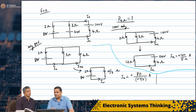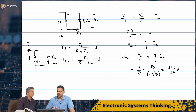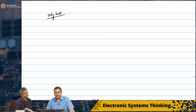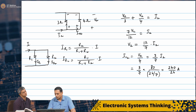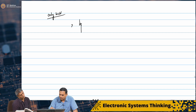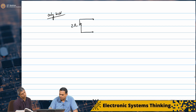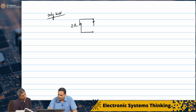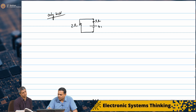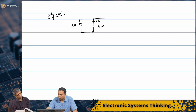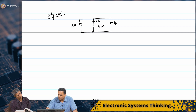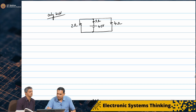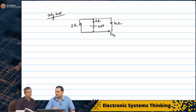Now let us go back to the original problem. We have a third voltage source, the 40 volt source. We need to apply only the 40 volt source: the 80 volt is de-energized leaving 2 ohms, and the 100 volt is de-energized leaving 4 ohms. We have 3 ohms and 40 volts in one arm. I call the current through the 4 ohm resistor I₀₃.